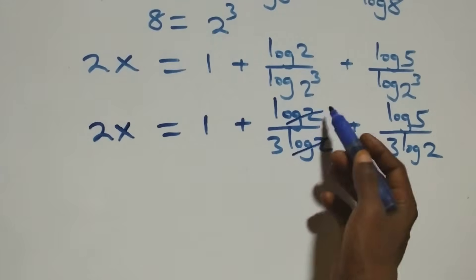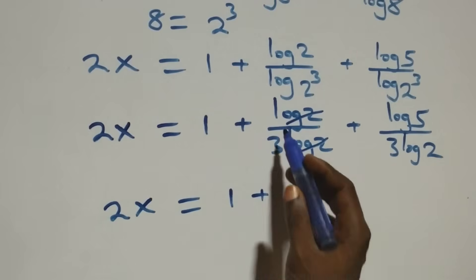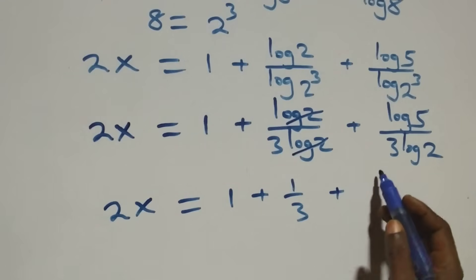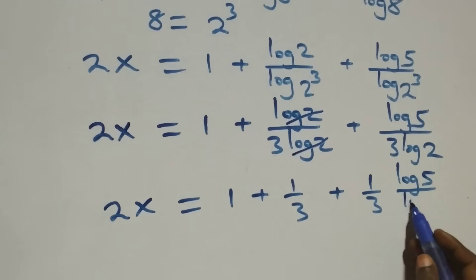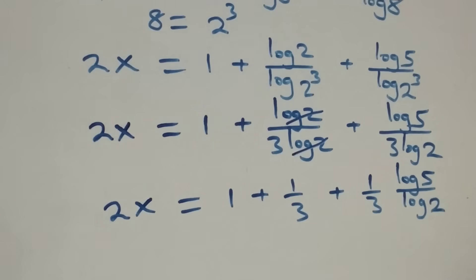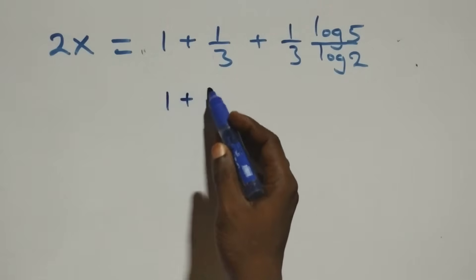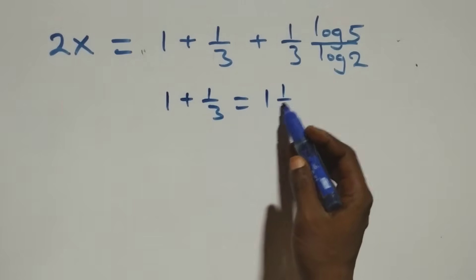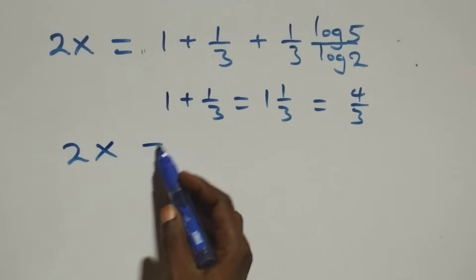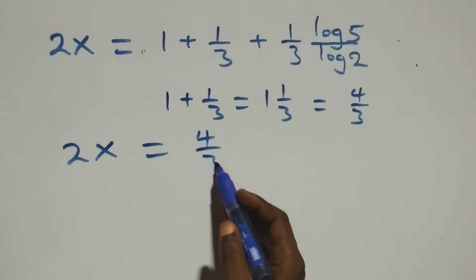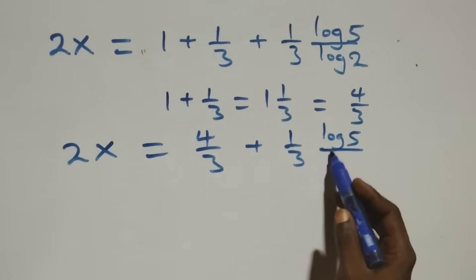From here, log 2 cancels in the second term, leaving 2x equals 1 plus 1 over 3 plus 1 over 3 times log 5 over log 2. We can express 1 plus 1 over 3 as 4 over 3. So what we have becomes 2x equals 4 over 3 plus 1 over 3 times log 5 over log 2.